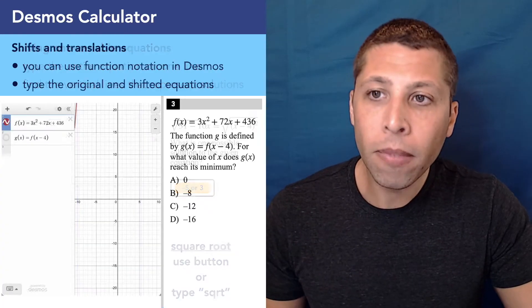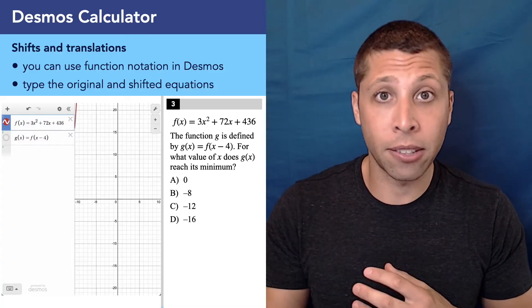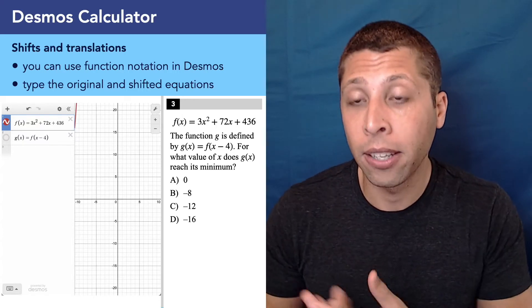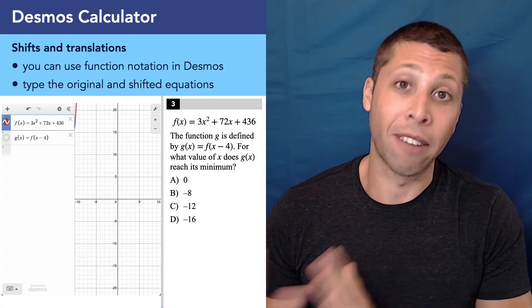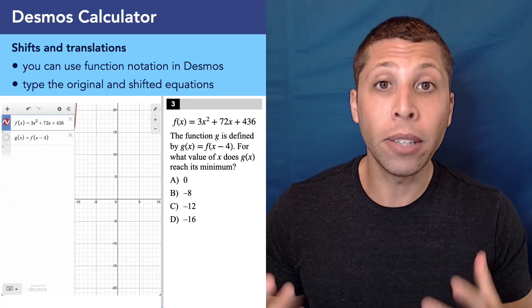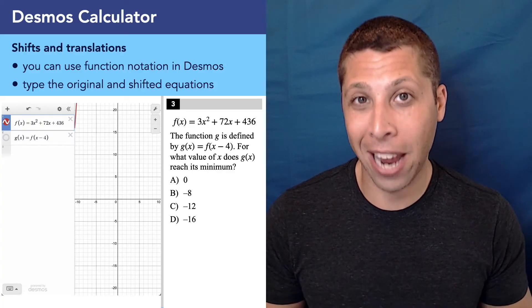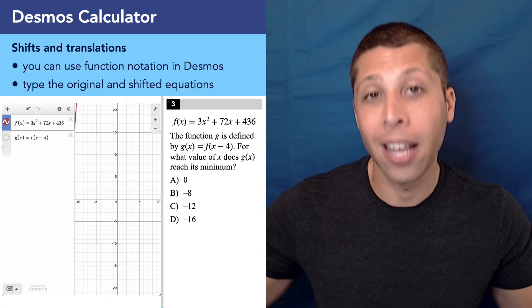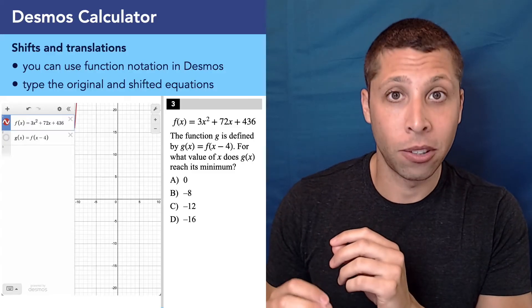Let's take a look at another one. Here we have a question that would definitely throw people off. It's giving us an f of x equation that's kind of complicated. It's also then telling us to change that equation in some way by talking about a new equation g of x that has this f of x minus four piece. And then we have to find the minimum value of both of these, or I guess of the g equation. So what would throw people off here is they don't understand like intuitively how the graph is going to move.